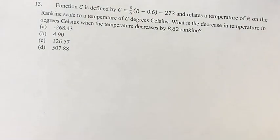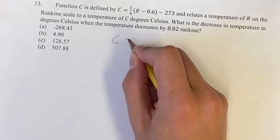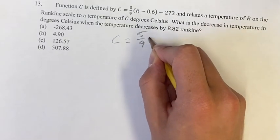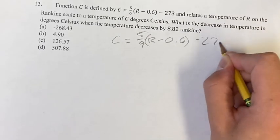Hello, and welcome back to another video. This problem, we're given the function C, which is defined as C equals 5 ninths of R minus 0.6, parentheses, minus 273.